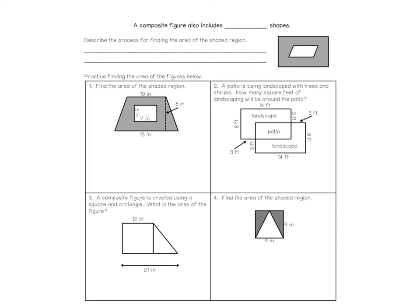Composite figures also include overlapping shapes. To find the area of the shaded region — which we did some of last week — we're going to subtract the two areas. That means we identify the shapes we have, find the area of each, and then subtract them to figure out the shaded portion.